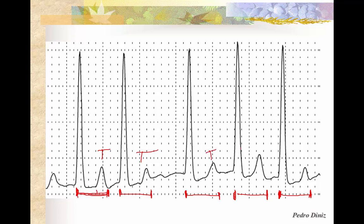So, in conclusion, what you're seeing here are actually T waves, and in this specific example there are no P waves. Keep in mind that using the PR interval and the QT interval — comparing each complex, each PR interval and every QT interval in your ECG — will help you identify and differentiate these two waves. I hope this is helpful. See you next time. Bye.